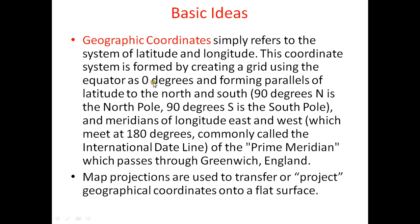Lines parallel to the equator are called latitudes. Perpendicular to these lines are the longitudes, which generally extend from east to west and meet at 180 degrees, commonly called the prime meridian. The prime meridian passes through Greenwich, England. West of this line is called west longitude, and east of this prime meridian is called east longitude.